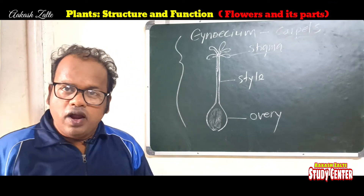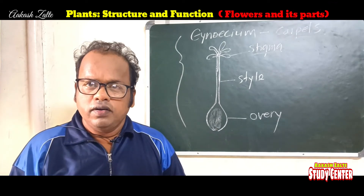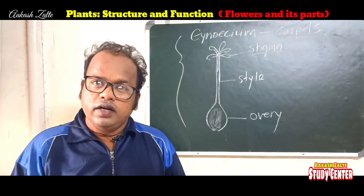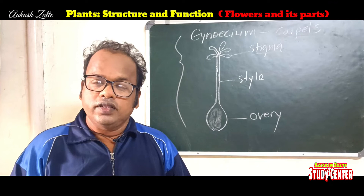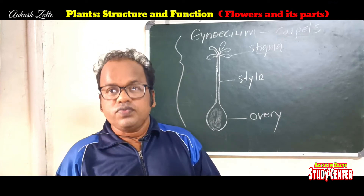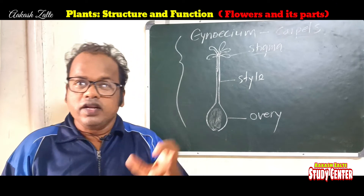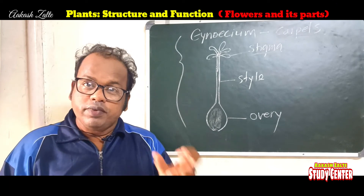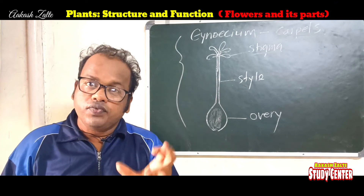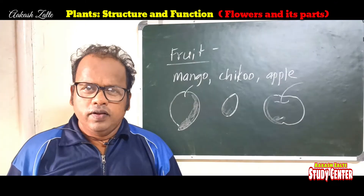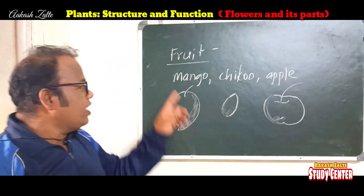So with the help of androsium and gynosium, a flower is converted into the next condition — that is fruit. That means how fruit is formed: fruit is formed from androsium and gynosium. Androsium and gynosium get converted into a fruit. Now let's turn to the fifth part of any plant — that is fruit.